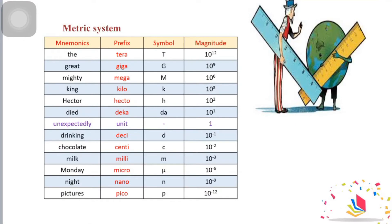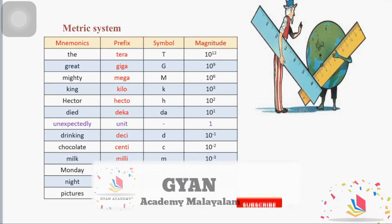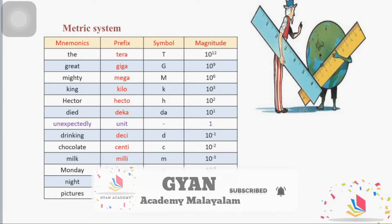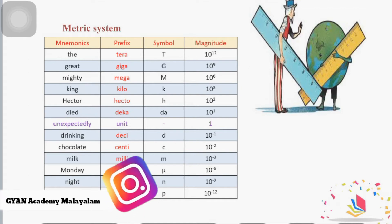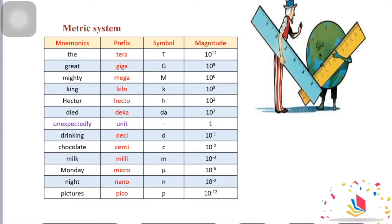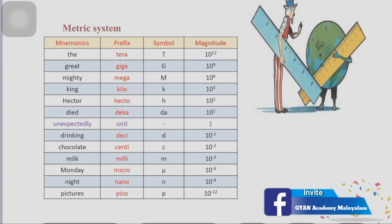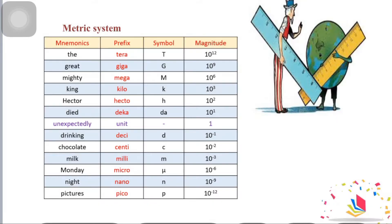The first prefix is tera — 1 tera equals 10 to the power 12, symbol capital T. Giga is capital G, value 10 to the power 9. Mega is capital M, 10 to the power 6. Kilo is small k, 10 to the power 3. Hecto is small h, 10 to the power 2. Deka is da, 10 to the power 1. For negative powers: deci is small d, 10 to the power minus 1. Centi is c, 10 to the power minus 2. Milli is small m, 10 to the power minus 3. Micro is mu, 10 to the power minus 6. Nano is small n, 10 to the power minus 9. Pico is small p, 10 to the power minus 12.